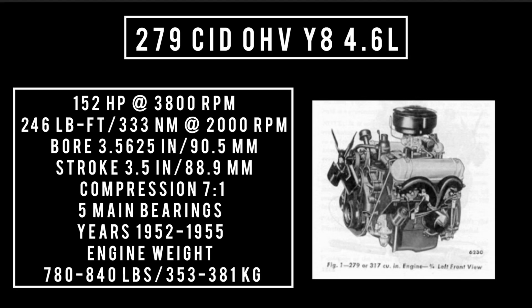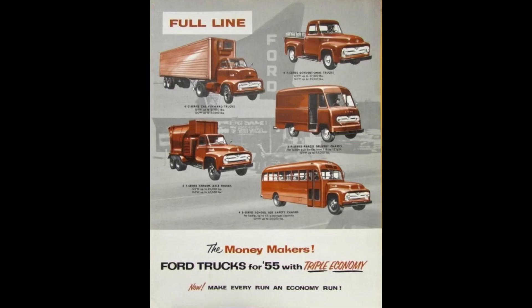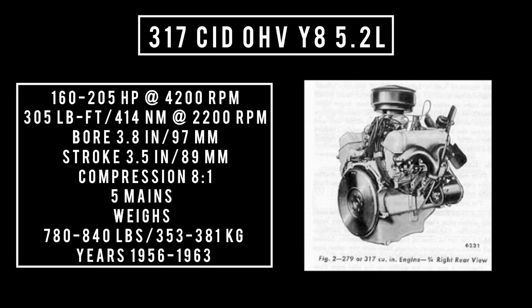Compression is 7 to 1. The 279 was used from 1952 through 1955 in the Ford HD truck series. Also introduced in 1952: the 317 cubic inch displacement Y-Block, 5.2 liters. It's good for anywhere between 160 to 205 horsepower at 4,200 rpm, up to 305 pound-feet or 414 newton meters at 2,200 rpm, with a bore of 3.8 inches and a stroke of 3.5 inches. Compression is 8 to 1, five main bearings. Used from 1952 to 1954 in Lincoln products — Lincoln versions used hydraulic lifters, Ford versions used solid valve lifters. In heavy-duty trucks it was offered from 1952 through 1955.